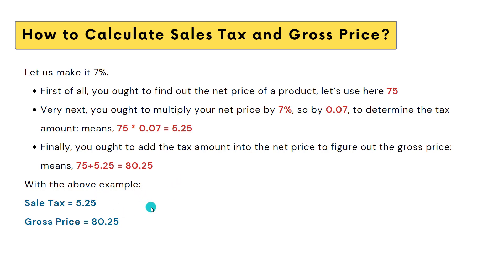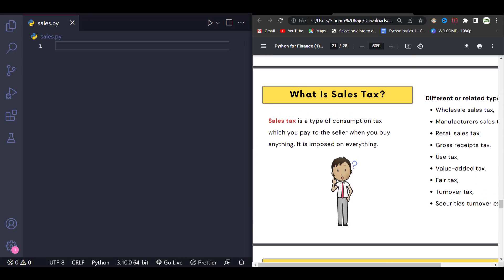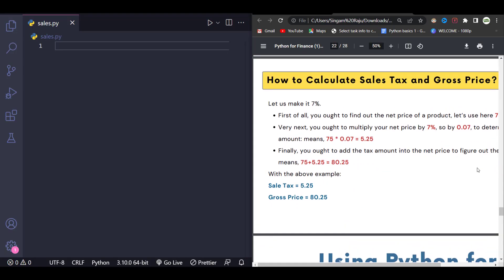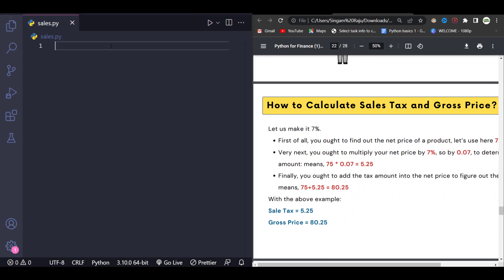Let's write code according to these steps. Let us open our favorite coding editor — for me, VS Code. So this is actually the sales tax calculator. First, we need the country tax, so let us get the tax of the country — for example, seven percent.